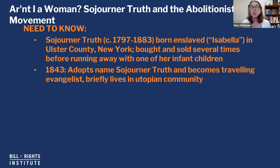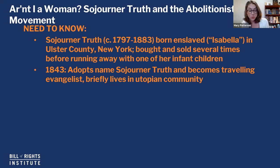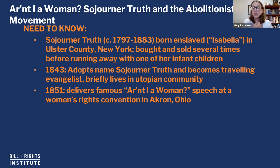In 1843 she adopts the name Sojourner Truth and becomes a traveling evangelist — faith and religion are extremely important to her. She briefly lives in a utopian community. Utopian communities were an interesting aspect of American life before the Civil War — communities that believed in reform, ending slavery, and equal rights for women. By living in this community she comes in contact with other famous reformers such as Frederick Douglass and William Lloyd Garrison, who actually visit her community. Through these connections she becomes invited to speak at public events, and in 1851 she delivers her famous 'Ain't I a Woman' speech at a convention in Akron, Ohio.